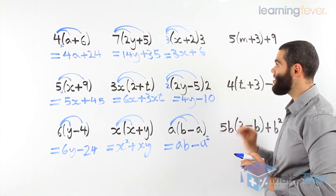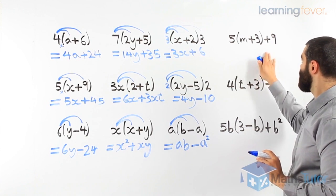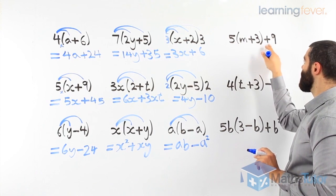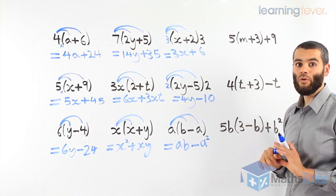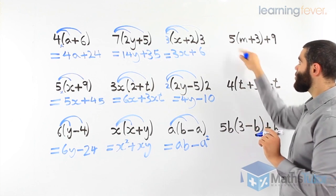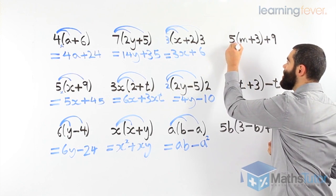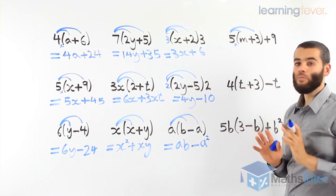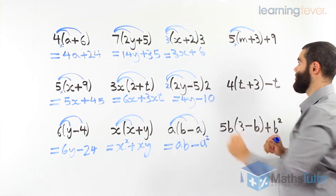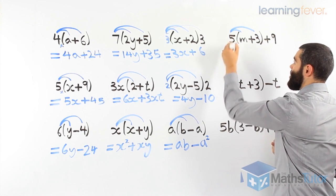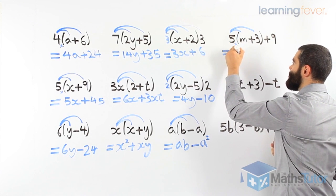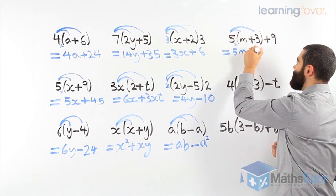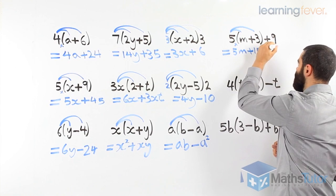Now here, we have 5, and then open bracket, m plus 3, close bracket, plus 9. Very important that you notice that the 5 is multiplied, there's a multiplication here, by what's in the brackets only. Only multiplied by what's in the brackets. It's very important that you notice that. 5 times m, 5m. 5 times 3, 15. And then we bring down the 9.